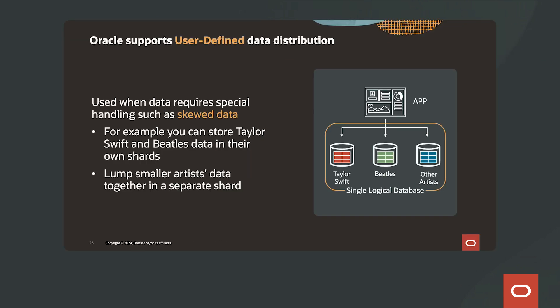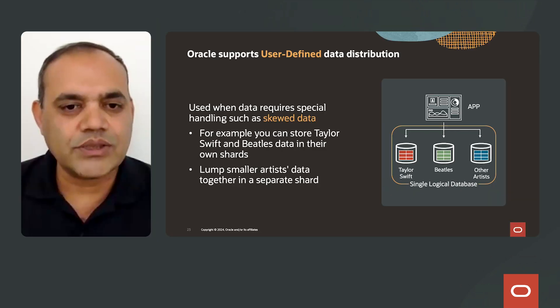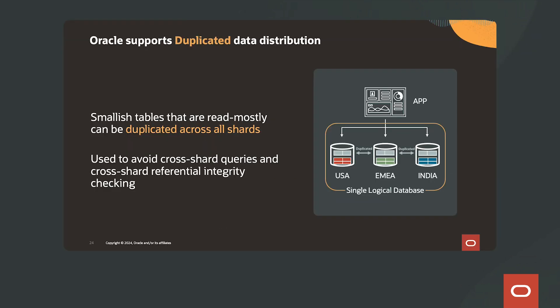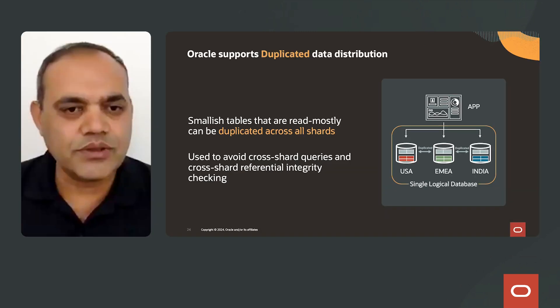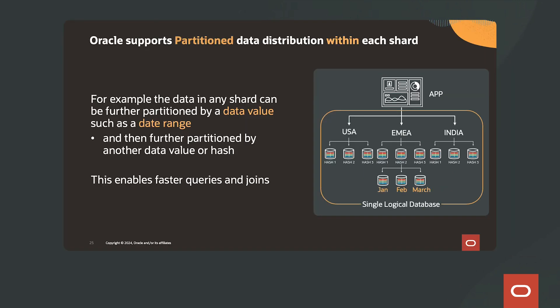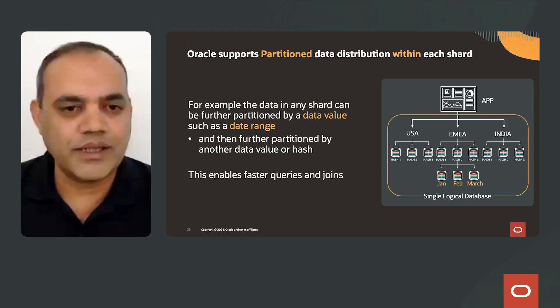Oracle also supports user-defined data distribution, which is useful when data requires special handling such as skewed data. For example, we can store Taylor Swift's and Beatles data in their own shard and combine smaller artist data together in a separate shard. Oracle supports duplicate data distribution for small read-only tables that can be duplicated across all shards, used to avoid cross-shard queries and cross-shard referential integrity checks. Oracle also supports partition data distribution within each shard — for example, data in any shard can be further partitioned by values such as date range, and then further partitioned by another data value or hash.